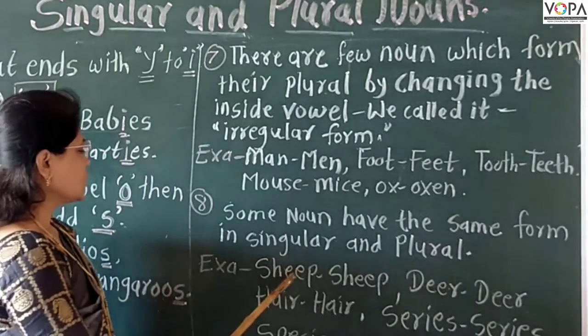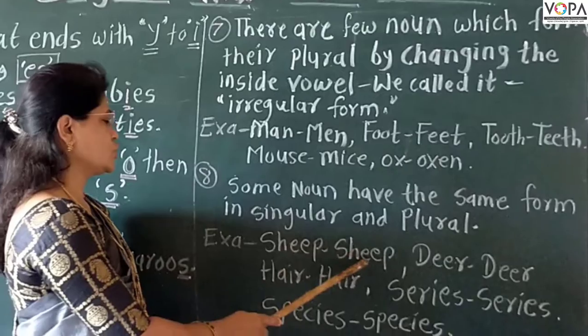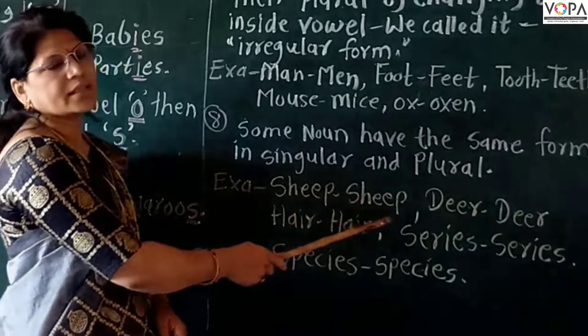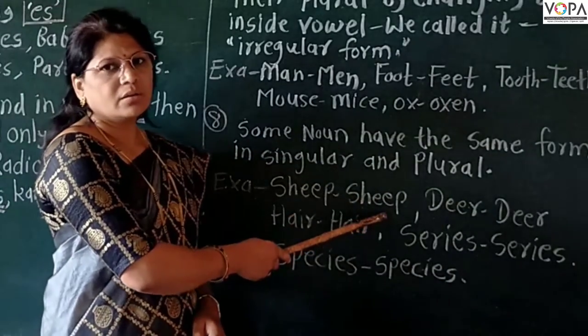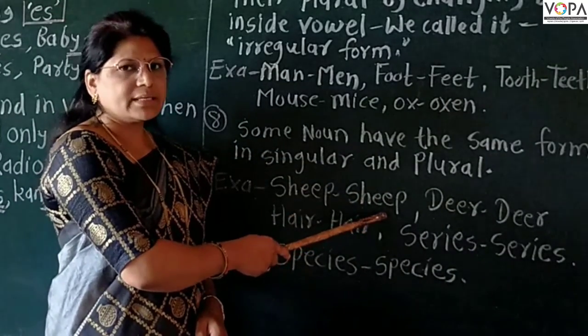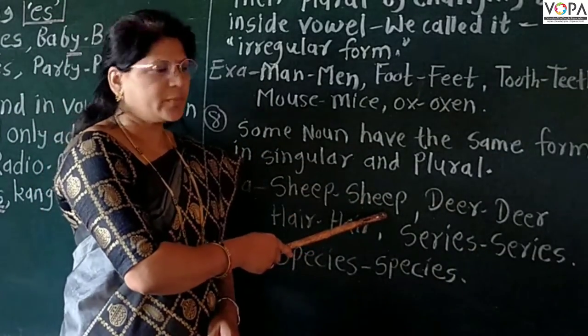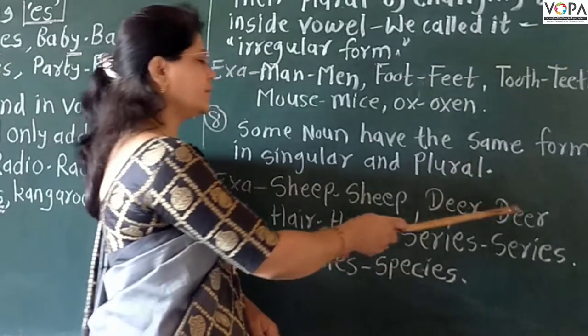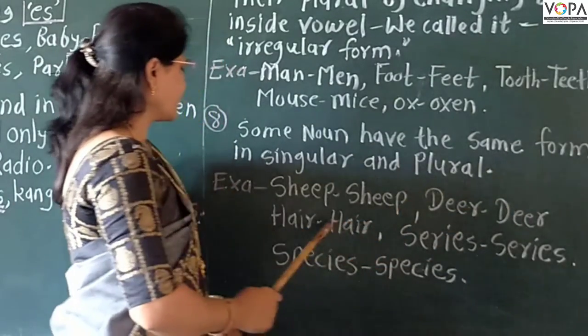For example: sheep — the singular and plural form have the same spelling. Deer — deer. The singular and plural form remain the same.